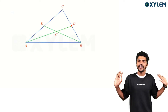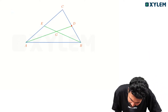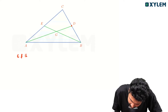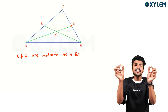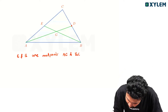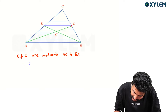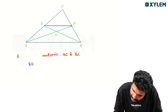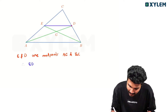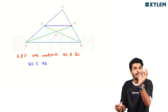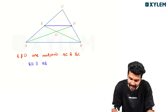We are going to prove this. In triangle ABC, E and D are midpoints of AC and BC respectively. We will mark the midpoints of two sides. E and D are midpoints, therefore DE is parallel to AB and equal to half of AB — by the midpoint theorem.